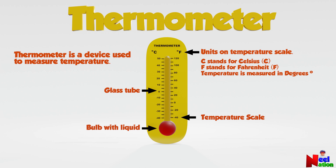When the temperature is hot, the liquid inside the bulb expands and moves up and shows a value. When the temperature is cool, the liquid contracts and moves down the tube and shows a value.